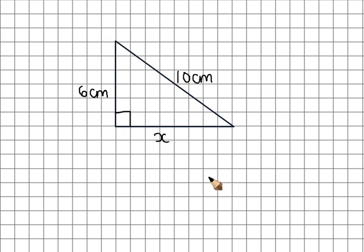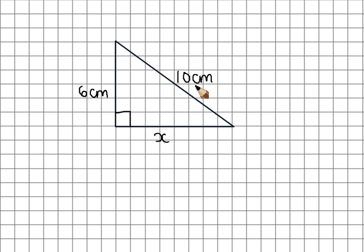We're now going to have a look at how you use Pythagoras' Theorem to find a short side in a right angle triangle. So remember we know that if you square the two short sides — here 6 and x — you should get the square on the longest side, which should be 10 squared. So we know that 6 squared plus x squared is 10 squared.